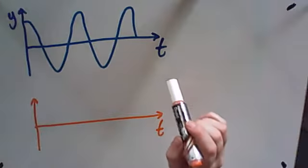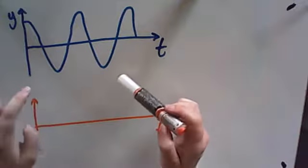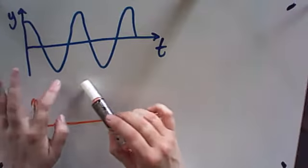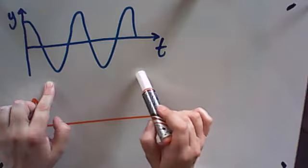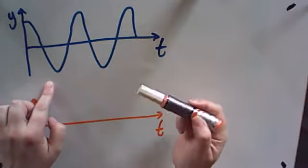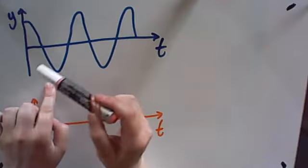We're going to start now talking about simple harmonic motion in a more mathematical way. And I hope that very soon you're going to agree with me that this is a completely understandable graphical representation of what's happening in a simple harmonic system.